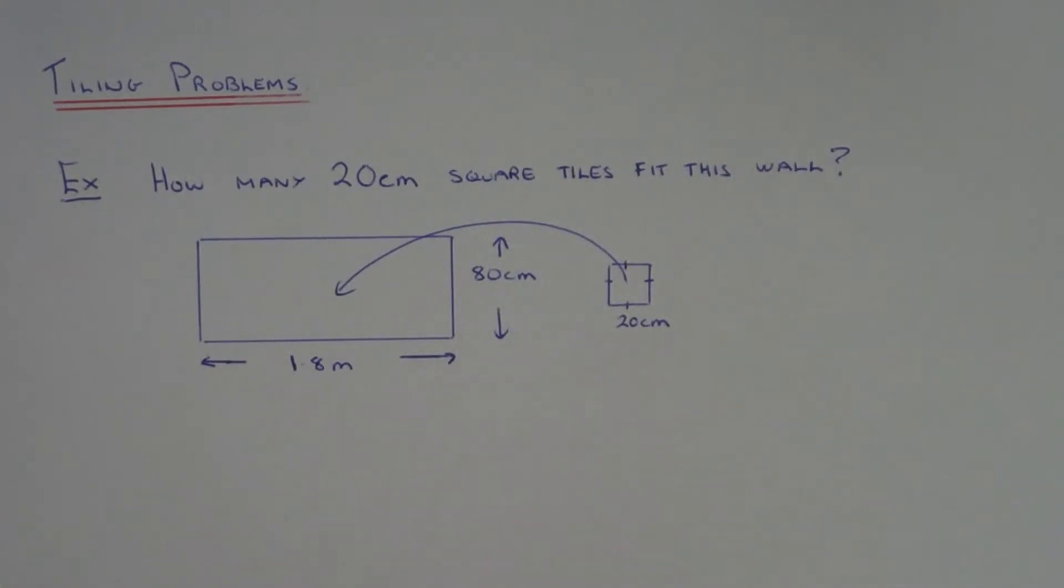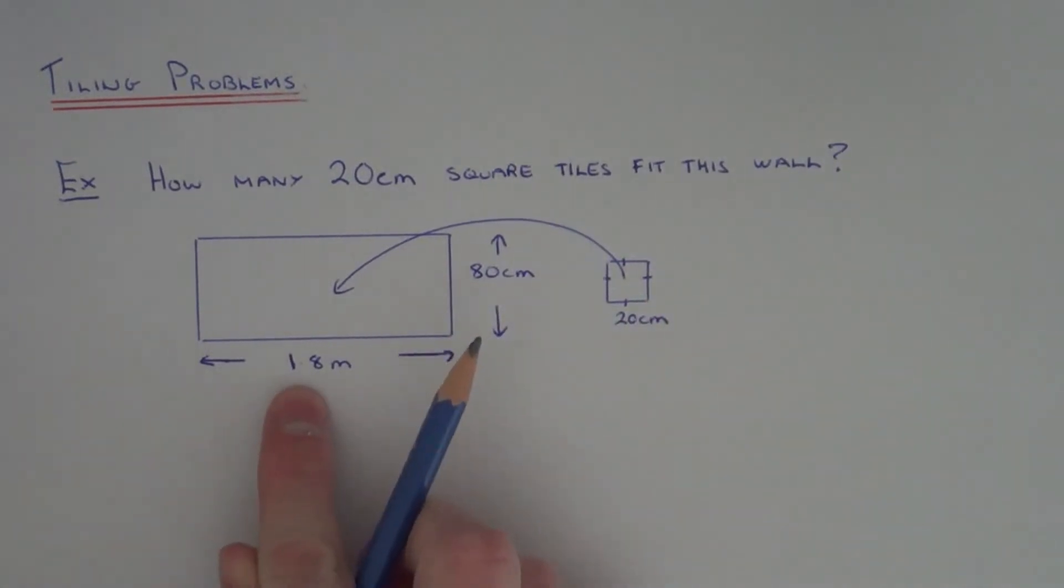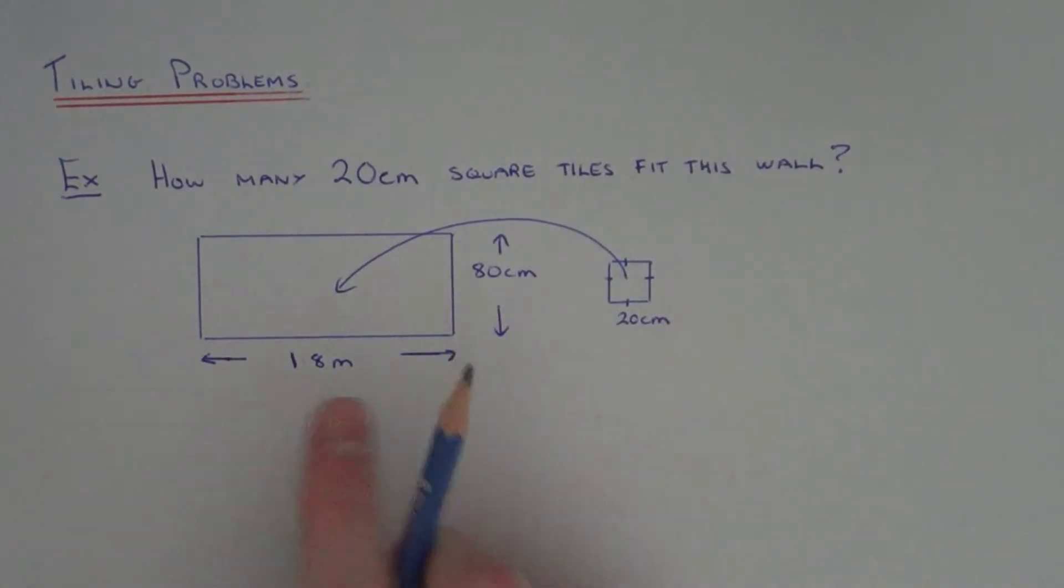The first thing you need to do is make sure that all the units given are the same. We have two measurements in centimeters and one measurement in meters, so we need to change this one in meters into centimeters.